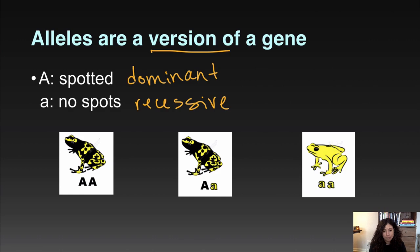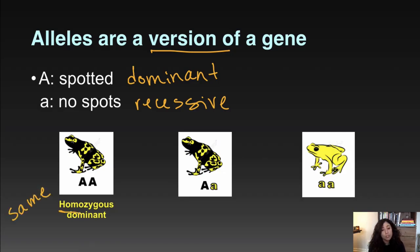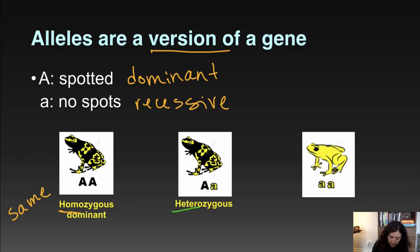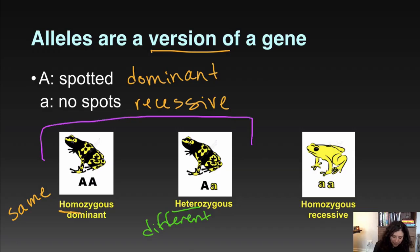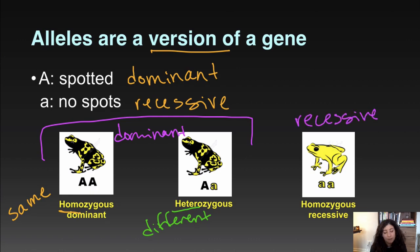There are three different possible genotypes and two different phenotypes. A frog could be homozygous dominant — homo means same, so they have two of the same dominant letter, big A big A. A frog could be heterozygous, hetero meaning different, so one big A and one little a. And then homozygous recessive, little a little a. The first two genotypes give the dominant phenotype, and only homozygous recessive gives the recessive phenotype.